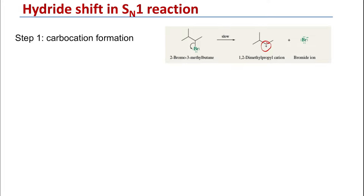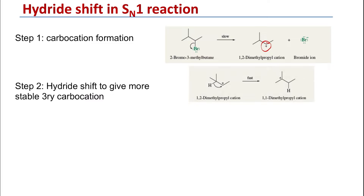This secondary carbocation has adjacent to it a tertiary carbon. So the second step, which is going to be a fast step, will be the hydride shift from the adjacent tertiary carbon towards the secondary carbocation. That will then generate a tertiary carbocation on the adjacent carbon, which is the more stable carbocation.